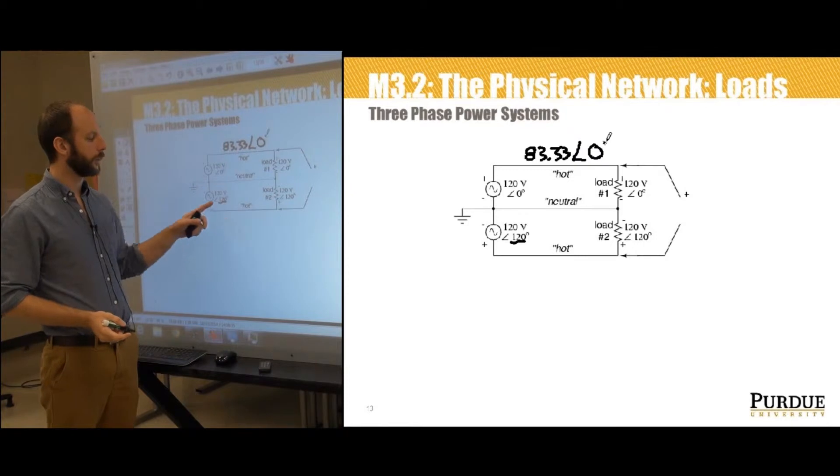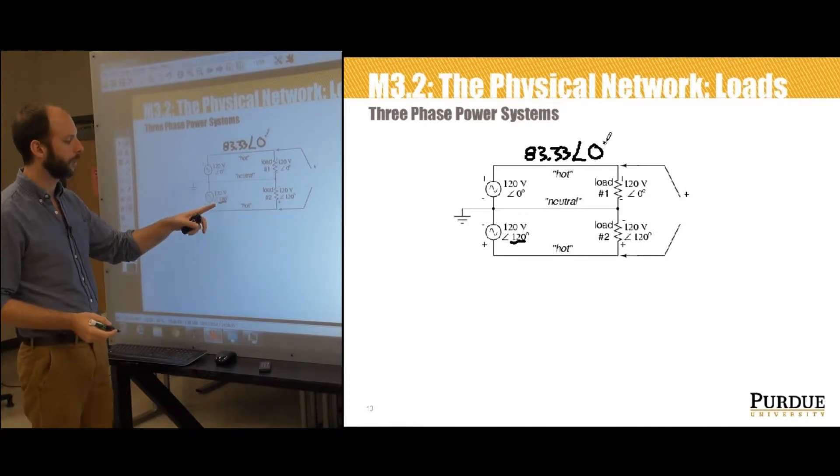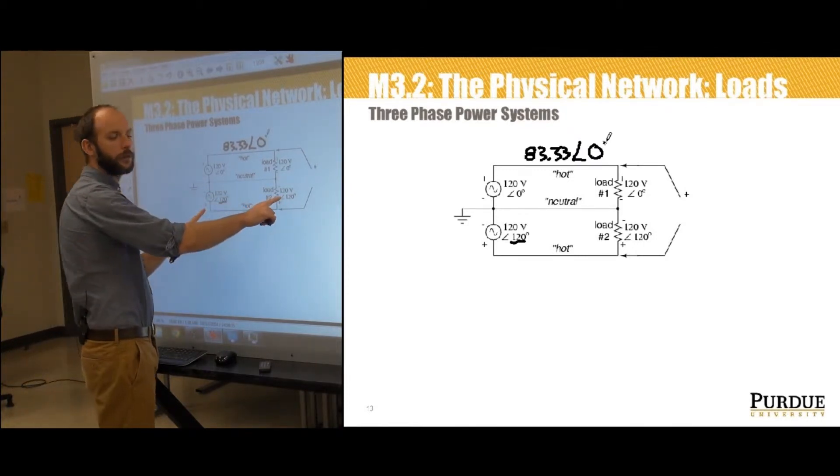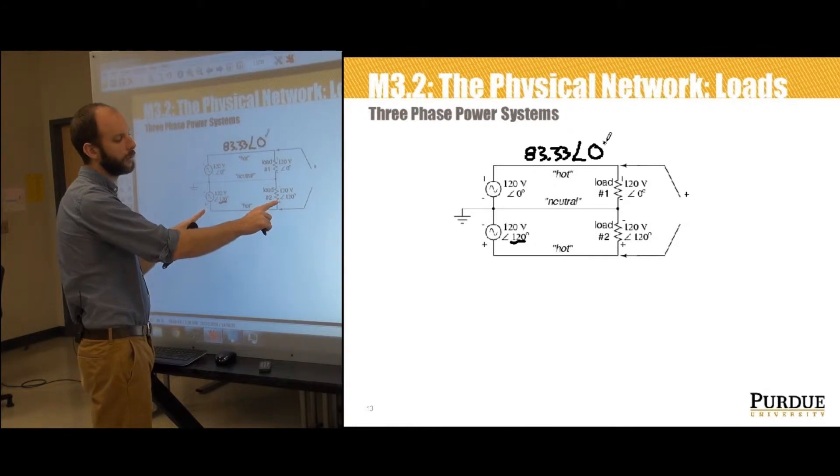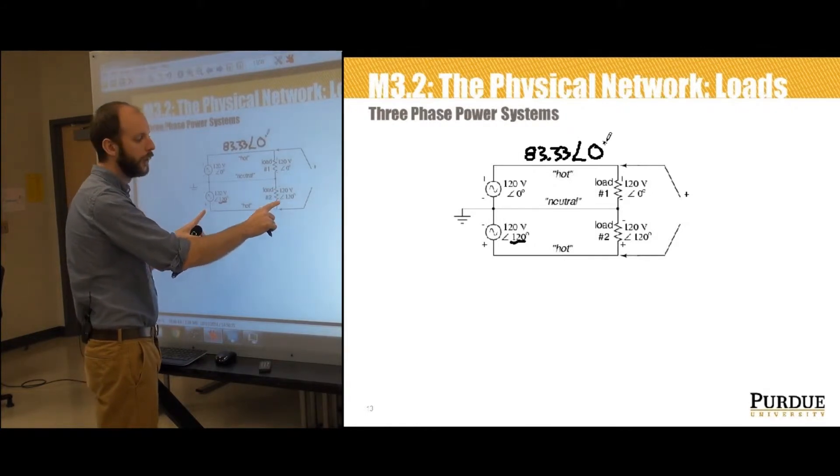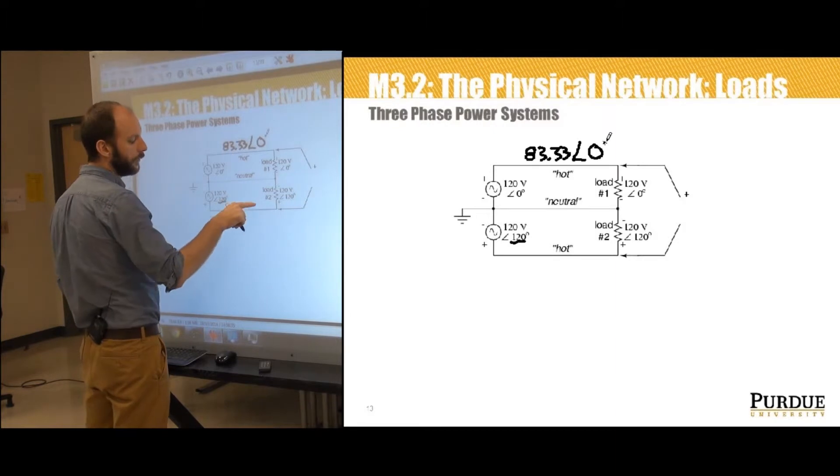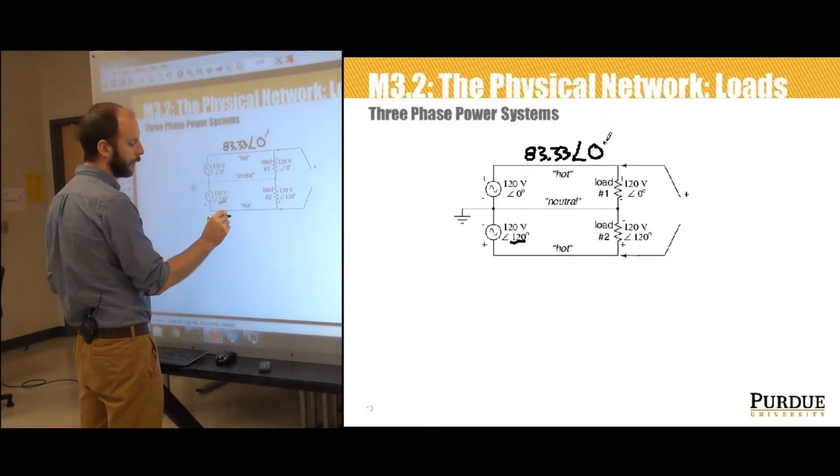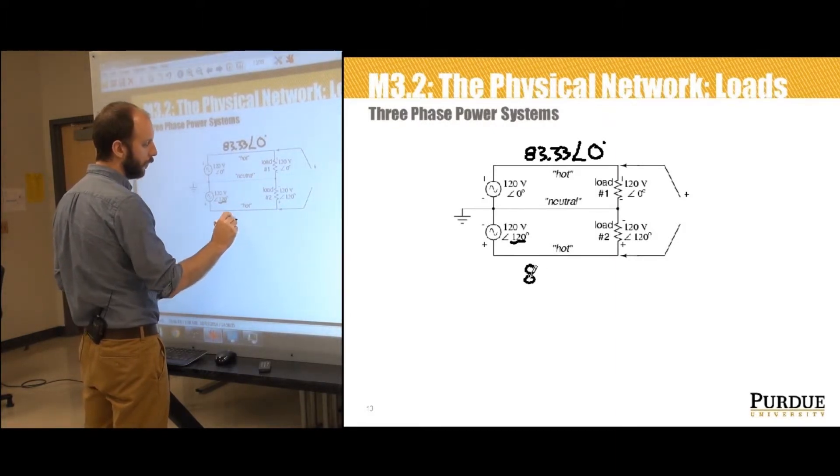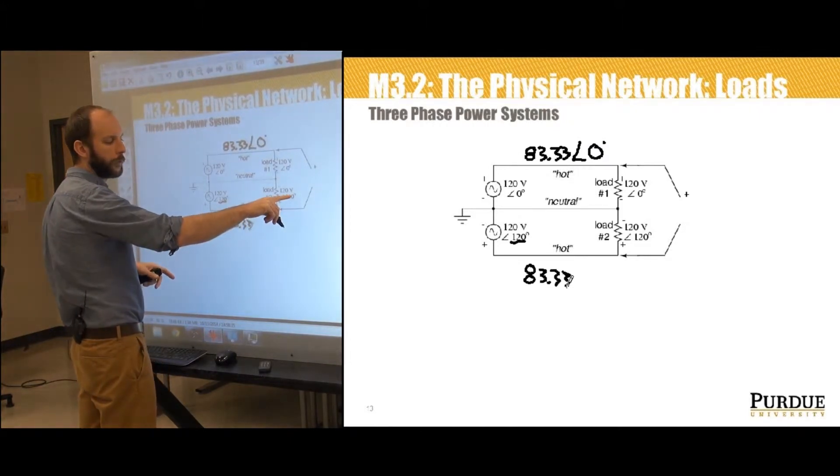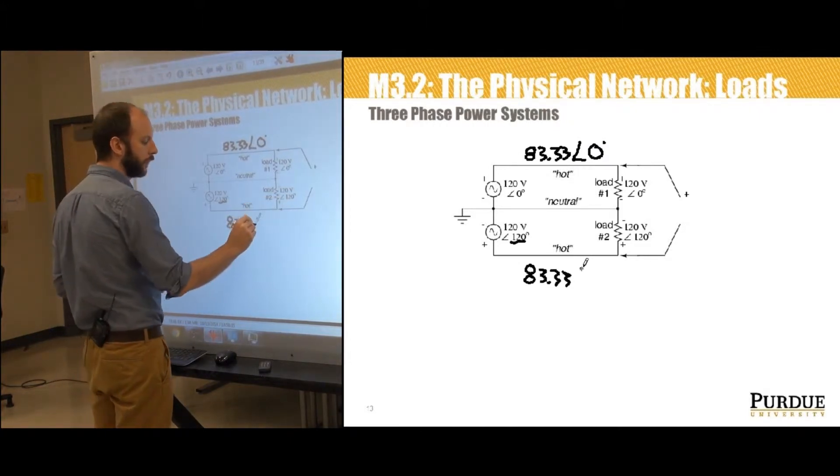It's a resistive load, so the voltage and current are in phase, so it's 83.33 at angle zero degrees. A similar analysis can be applied to this bottom circuit. We've got 120 volts at 120. That means the voltage drop across this resistive element, this 10 kilowatt resistive element, is 120 at angle 120. That means the magnitude of the current flowing in this bottom circuit is going to be 83.33, but its phase angle, voltage and current have to be in phase and resistive load, so its phase angle is going to be 120.